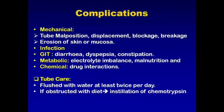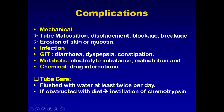The complications of enteral nutrition: first are mechanical complications regarding the tube. The tube may be malpositioned or displaced from the site it was inserted — for example, outside the stomach or outside the jejunum — or there may be blockage, breakage, or leakage from the tube. Also, the tube may cause erosion of the skin or mucosa.